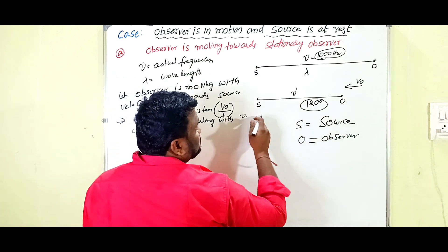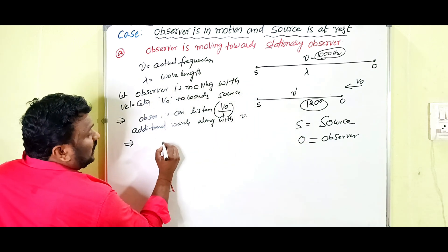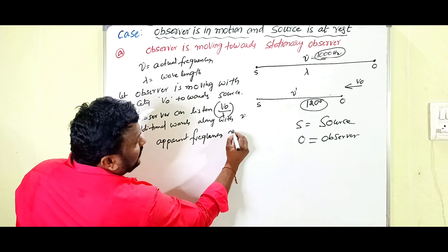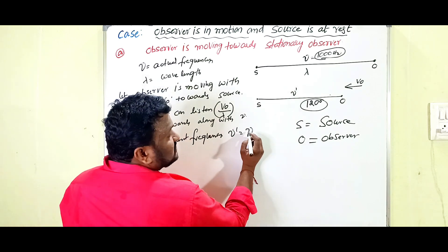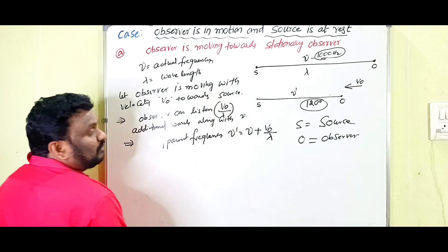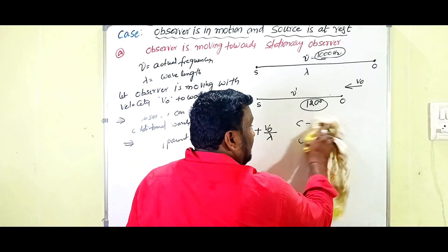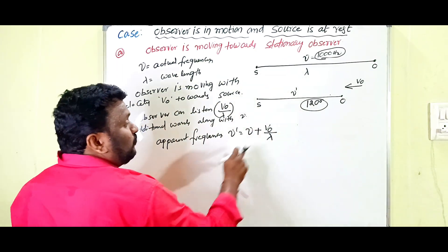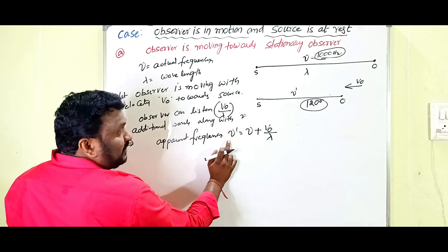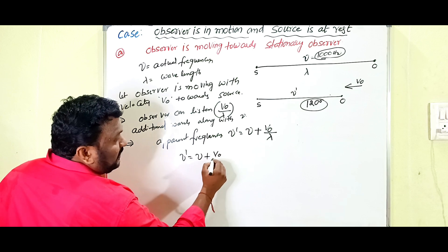When the observer is moving towards the source, the frequency changes. That's why we write the apparent frequency nu-dash (ν'). The actual frequency is nu, and in addition to that, the observer can listen to v₀/λ additional waves. So the apparent frequency is: ν' = ν + v₀/λ.